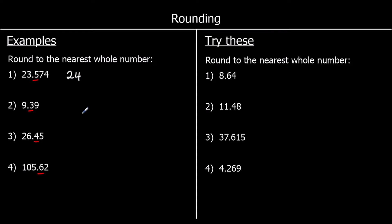9.39 — we've got a 3 as our key number, it's not 5 or above, so it's going to stay as 9 — it's closer to 9 than it is to 10. 26.45 — we've got a 4 after the decimal point, it's not 5 or above, so it stays as 26. And 105.62 — we've got a 6 after the decimal point, it is 5 or above, so it rounds up to 106 — it's closer to 106 than it is to 105.